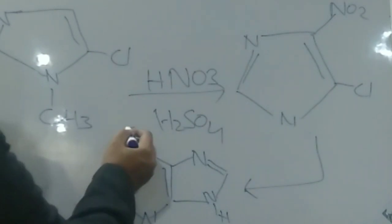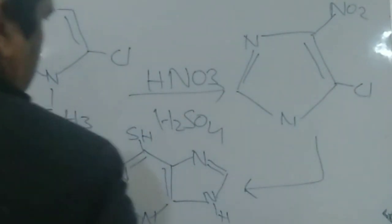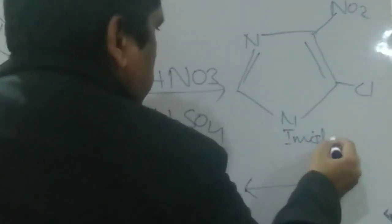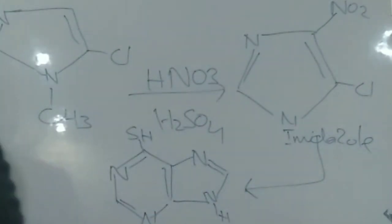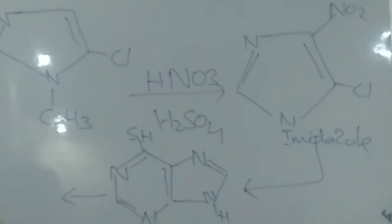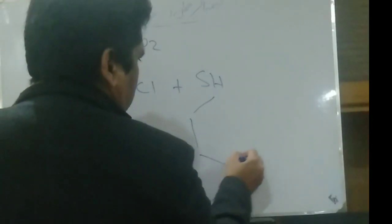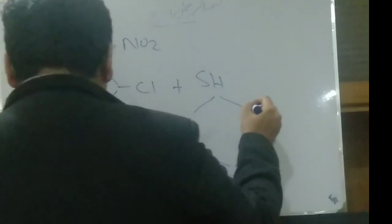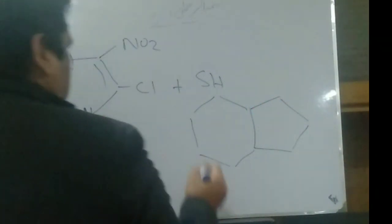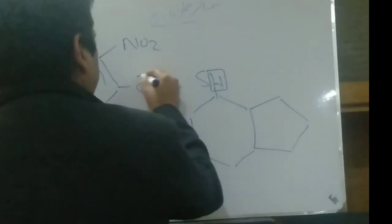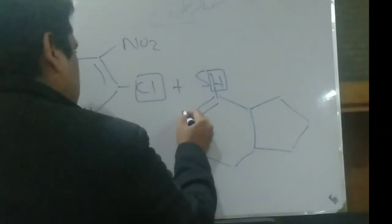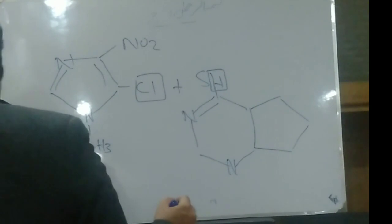The thiopurine — containing sulfur — and the purine combine with nitroimidazole. The sulfhydryl hydrogen combines with the chlorine leaving group, forming a new thioether linkage. Nitrogen is present at the first and third positions of the imidazole ring.